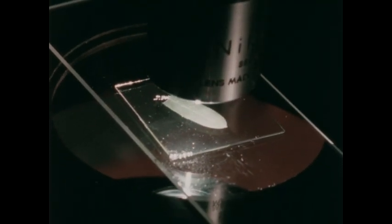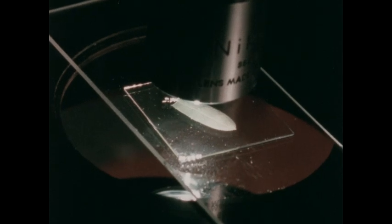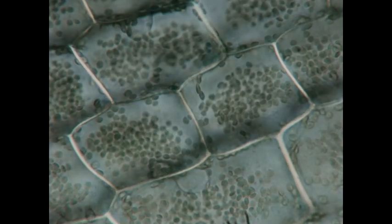Plant cells have two kinds of structures not found in animal cells. One is the cell wall. Cell walls give plants their amazing strength and resiliency.